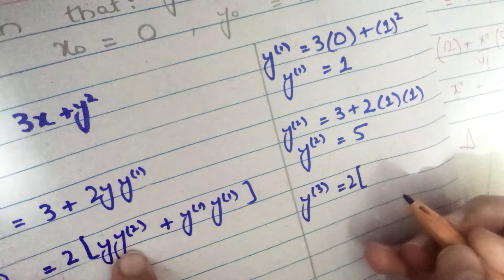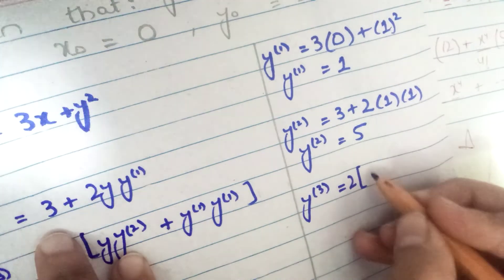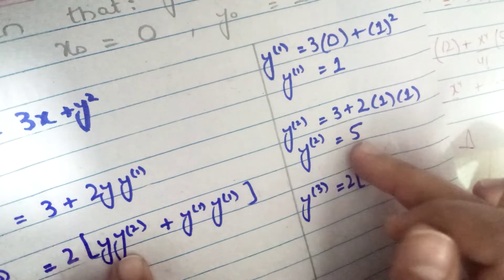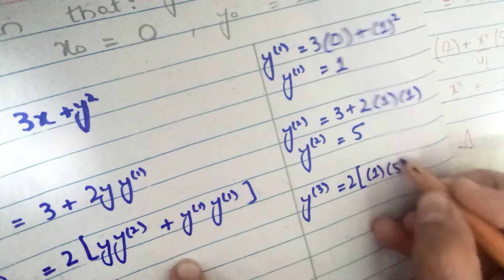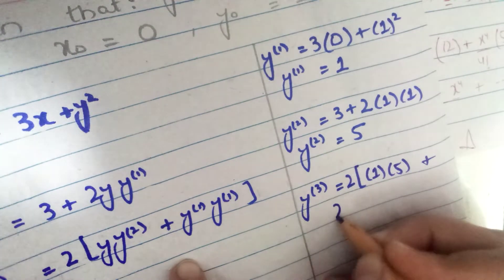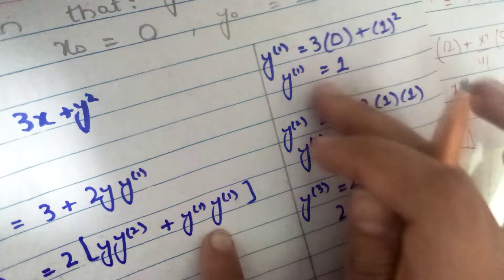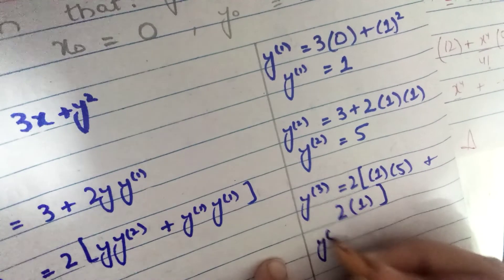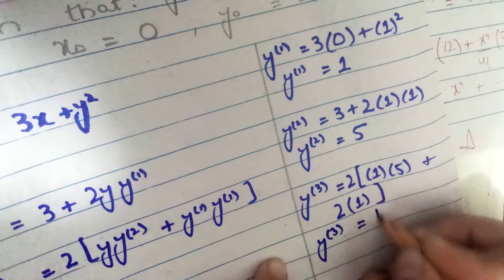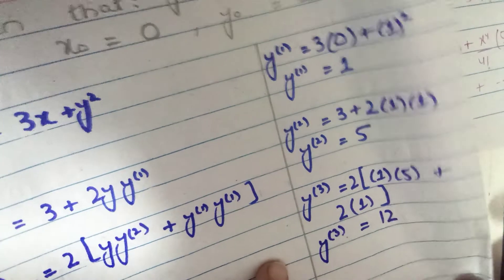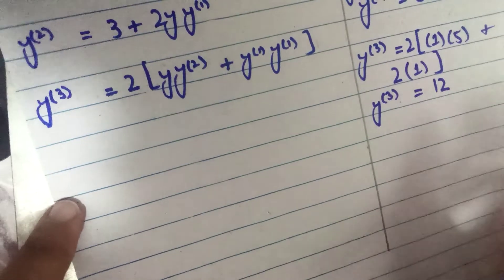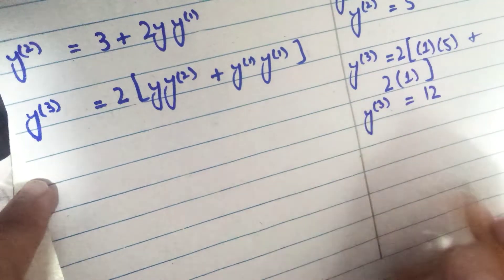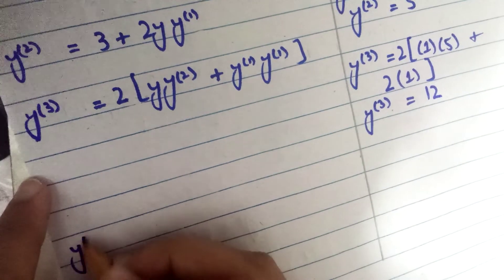Substituting the values: 2 times y naught (which is 1) times y2 (which is 5), plus 2 times y1 (which is 1) times y1 (which is 1). So y3 equals 2×1×5 + 2×1×1 = 10 + 2 = 12. This is our third non-zero value.